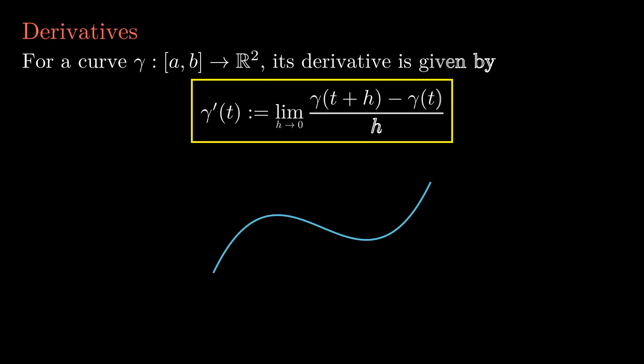When we have a curve, its derivative is defined in the same way as the derivative of a usual function. We take the Newton quotient and let h go to zero. What one gets in the limit, provided it exists, is an arrow that points in the direction in which the particle is moving at time t.